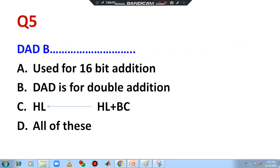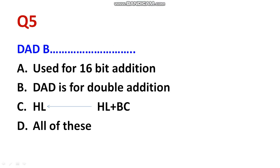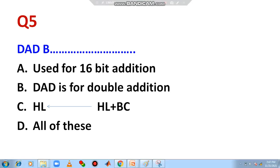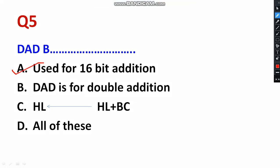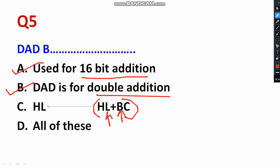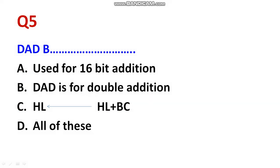Question 5: What is the meaning of DADB? DADB is used for 16-bit addition — that is correct. And DAD is a double addition — that is also absolutely right. Why double addition? Because it involves the HL pair and the BC register pair. All the statements are correct as far as DADB is concerned. Please select option D.